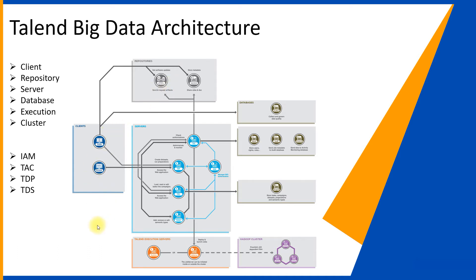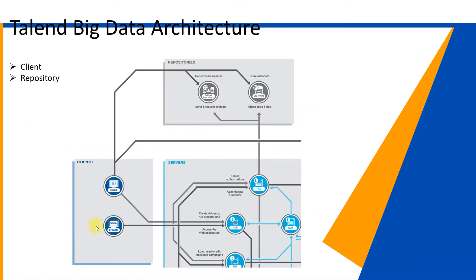The next section is the client and the repositories. The repository is used to store all your source code in Git, and the built code goes into an artifact repository. The Studio is configured using the TAC URL. All configurations for the Git repository, job servers, and Hadoop clusters are done within the TAC. You configure your Studio with a remote repository stack connection.